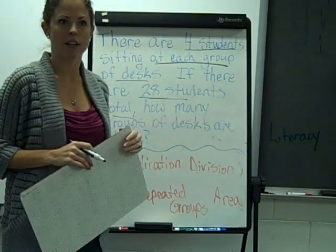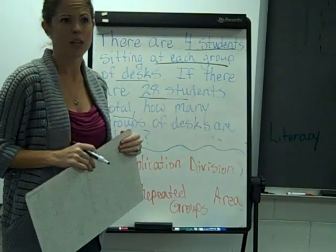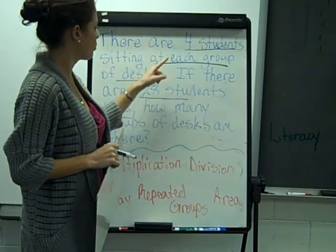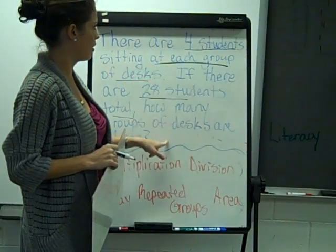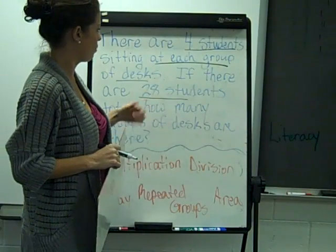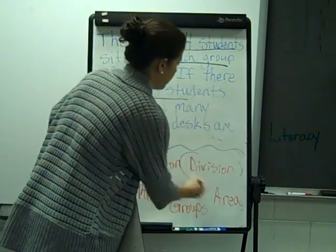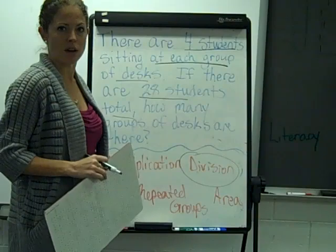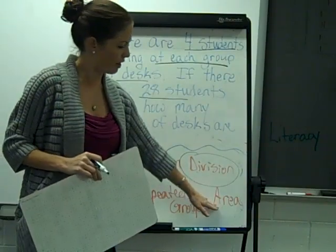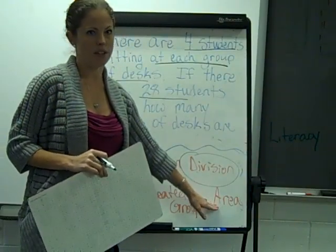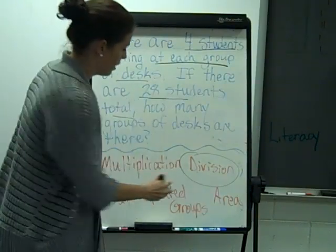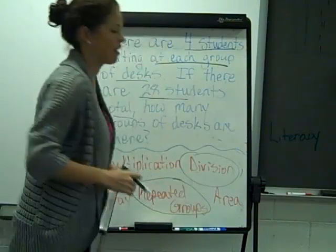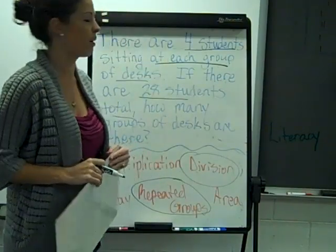If there were a different amount of students at each group, it wouldn't work. But since there's four at each group, we're trying to figure out how many groups can be made with 28 students. So we are dividing. And it tells me it's not an array — there's not rows and columns. It's not area; we're not taking a width and a length. We're repeating groups — the students at the desks — and trying to figure out how many groups there are.